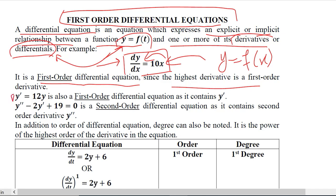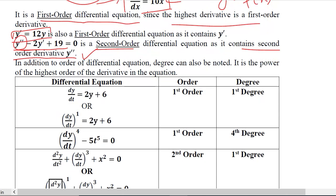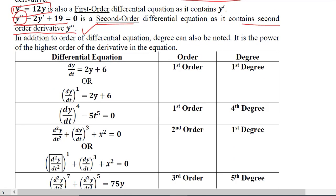Here is an example: y' = 12y is a first order differential equation. However, y'' - 2y' + 19 = 0 is a second order differential equation because it contains a second order derivative. So the classification is dependent upon the order of the derivative that we are dealing with.